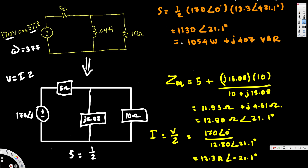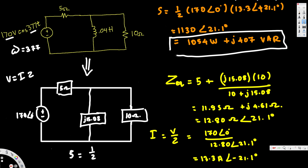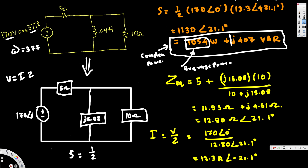This entire expression — 1054 + j407 — is our complex power. The real part, 1054 watts, is the average power. The imaginary part, j407 VAR, is the reactive power. That is how we calculate complex power, average power, and reactive power.